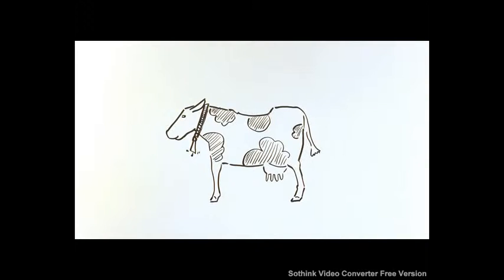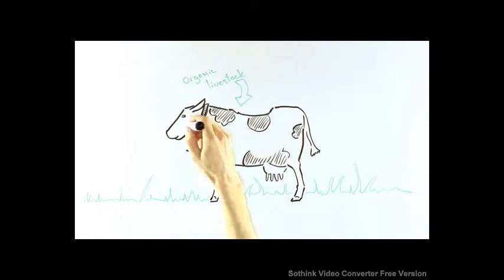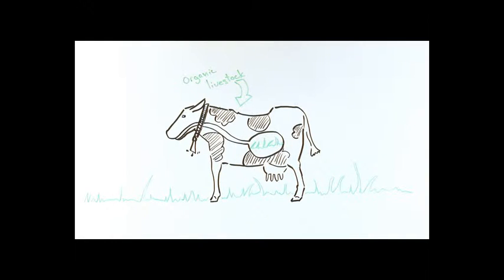When it comes to livestock products, the organic livestock have to eat only organic food. So they get the healthy organic plants, whether that's alfalfa or grass or corn.